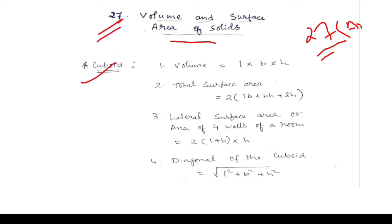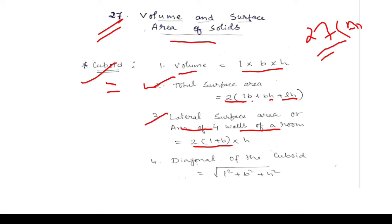In Exercise 27A we will be dealing with cuboid and cube. The formulas for cuboid are: Volume = length × breadth × height (l × b × h). Total surface area = 2(lb + bh + lh). Lateral surface area, or area of four walls of a room, = 2(length + breadth) × height. Diagonal of a cuboid = √(l² + b² + h²).